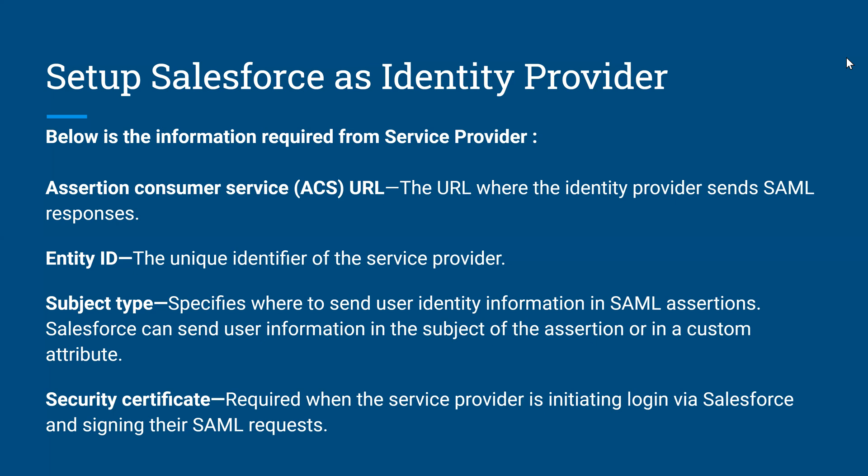The last one is security certificate. Whenever you use an identity provider from a service provider — for example, if you are taking Salesforce as your service provider and Google as your identity provider — your Salesforce org will send a SAML request to the Google identity provider. If you want to encrypt that SAML request, the identity provider requires a certificate from your service provider. These are the basic pieces of information required from your service provider.